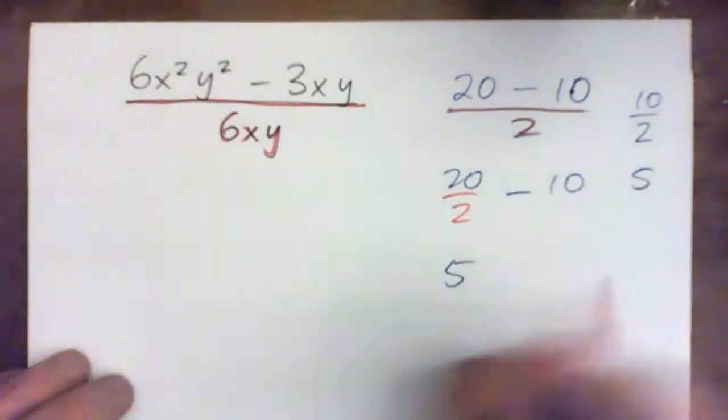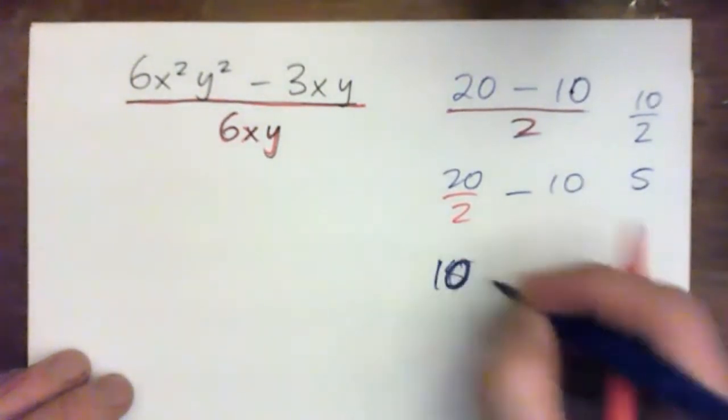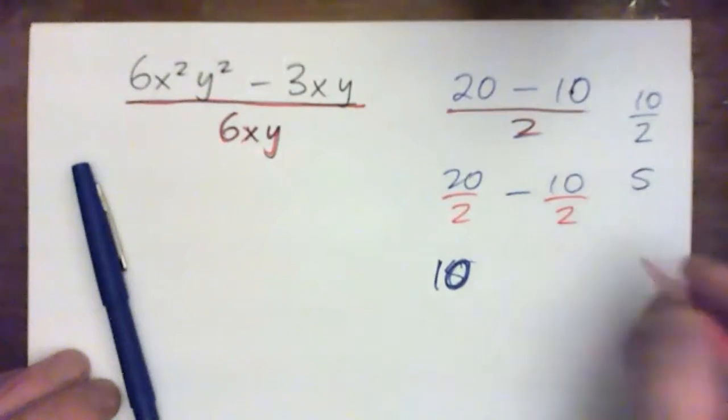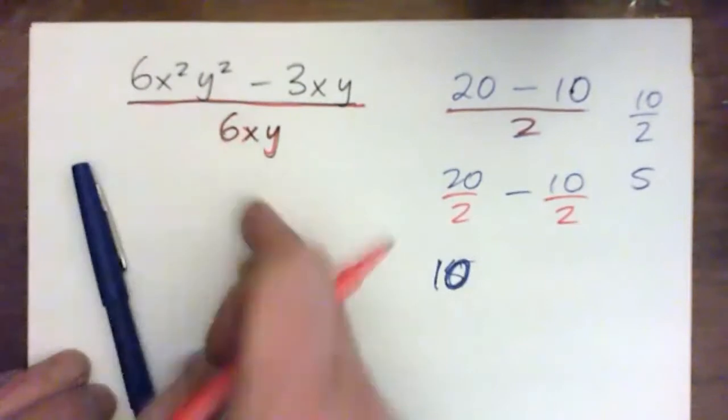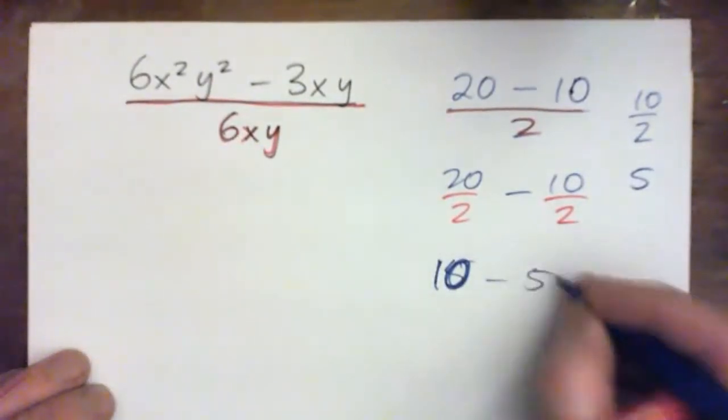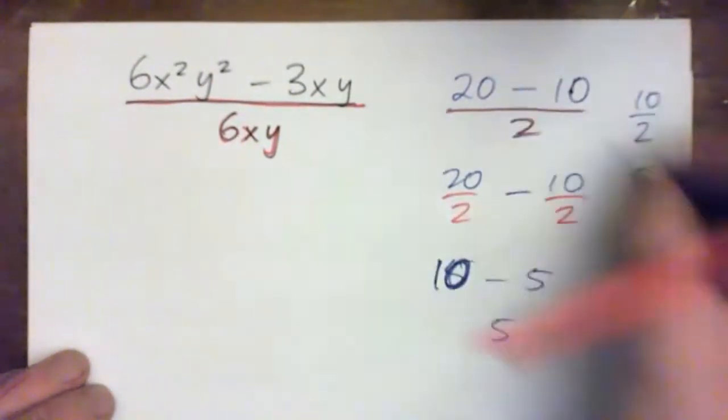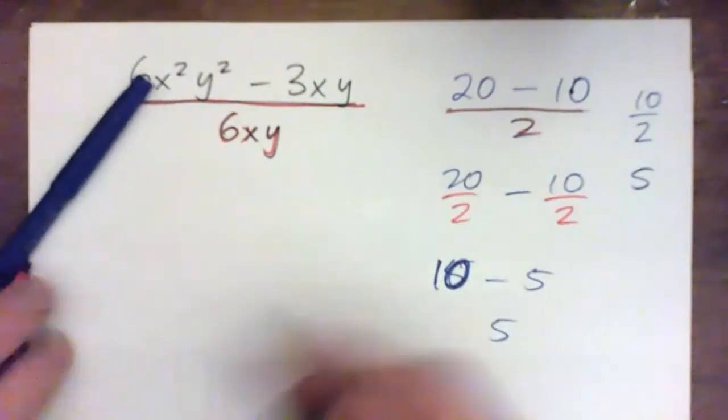Oh no, I mean 10. Sorry, I got 10s and 5s all over the place. But the point is, when you're subtracting, you have to divide each term, not just the first one. So this would work out like that. Anyway, quick reminder.